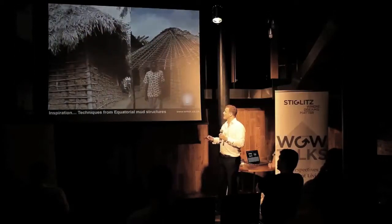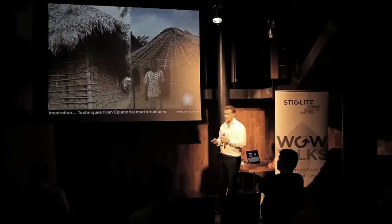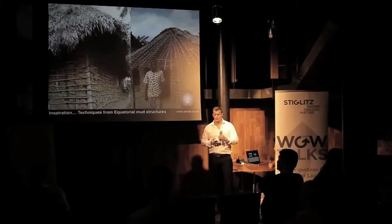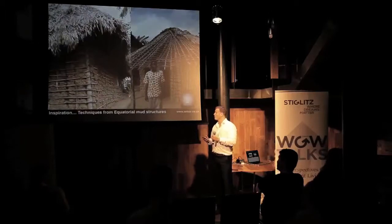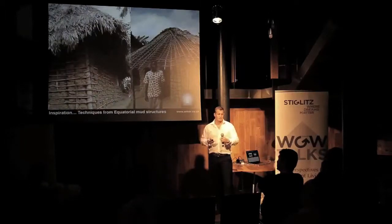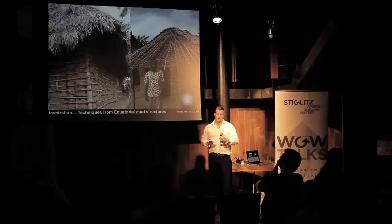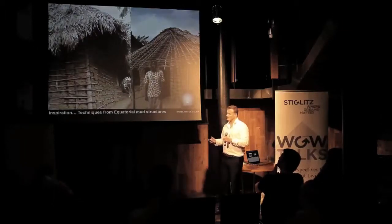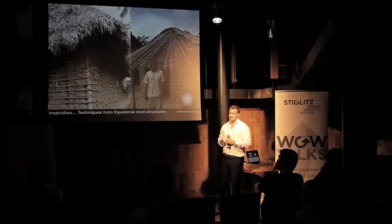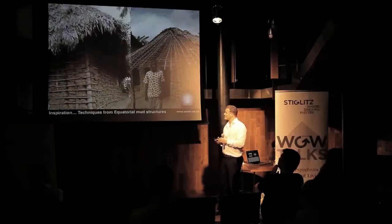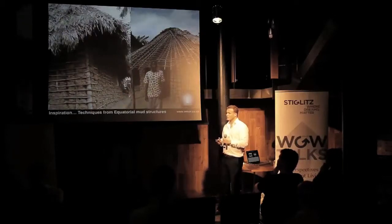The igloo idea came from mud techniques we saw in the Congo and Gabon — equatorial regions of West Africa where they use thermal mass. As architects we all know this, but it's something we forget. It's very easy when you design in the UK to forget about climate. It's nice to go back to basics and realise we could make more of what's around us.